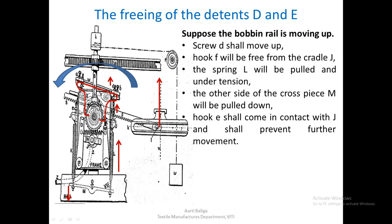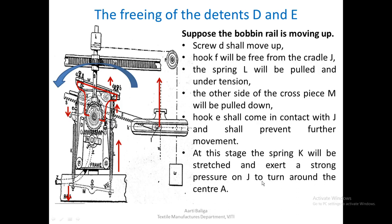Hook E, currently shown as away from cradle J, will slowly come in touch with cradle J at the top. When E touches J, further downward movement of E will be prevented. At this stage, spring K which was not under tension will start coming under tension slowly as this end of the cross piece still moves down, because the bobbin rail has still not completed its upward motion.